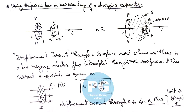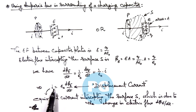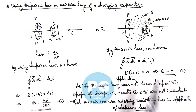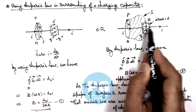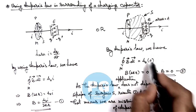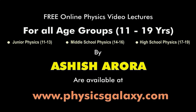Displacement current is also considered to have the same unit — amperes — and its role also remains the same. If we consider this displacement current, as seen in the previous case, the current is ε₀ × dΦ_E / dt. If we substitute this in the Ampere's law relation instead of zero, the result will become consistent.